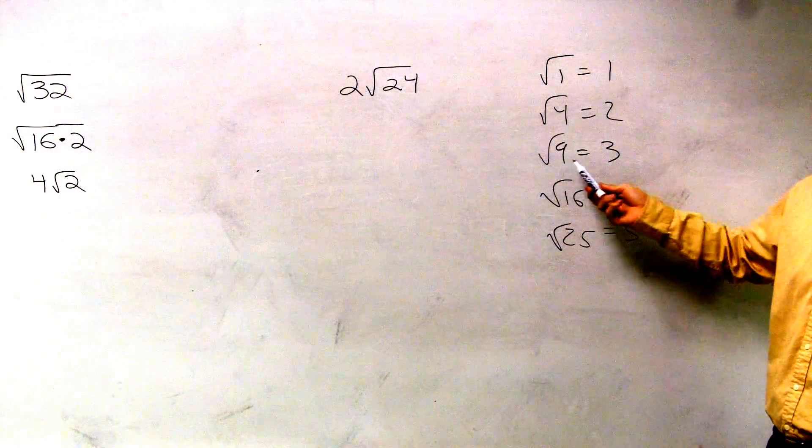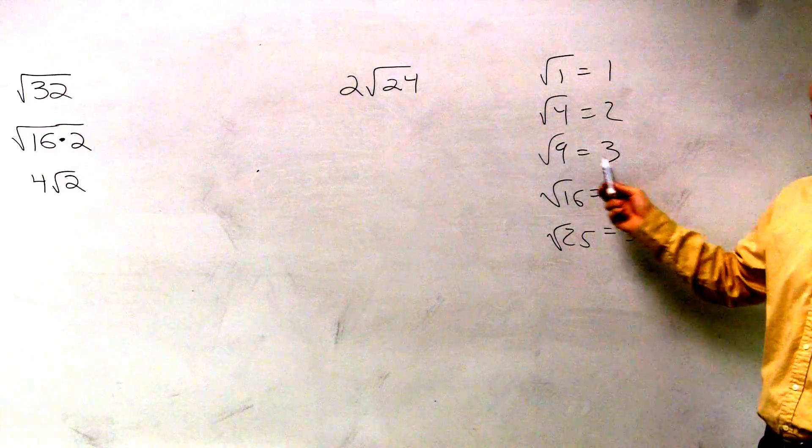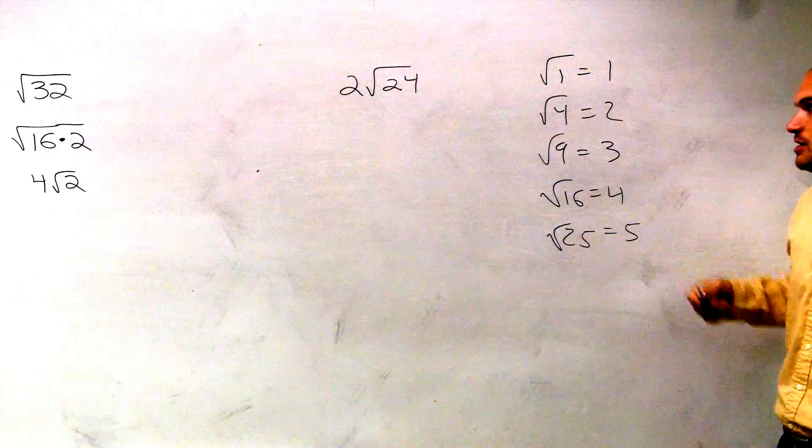Because the square root of 9 we can rewrite as just 3, right? Because 3 times 3 gives you 9, 4 times 4 gives you 16, and so on.